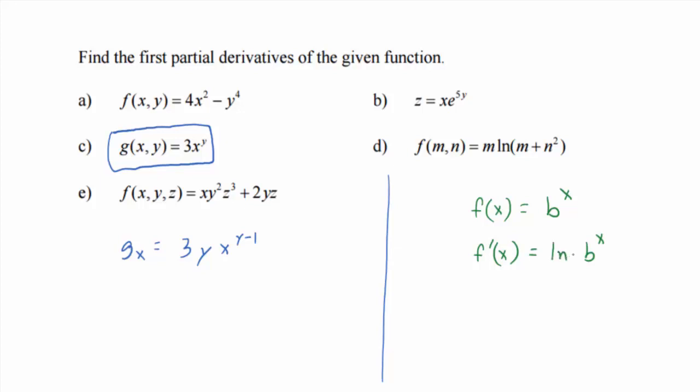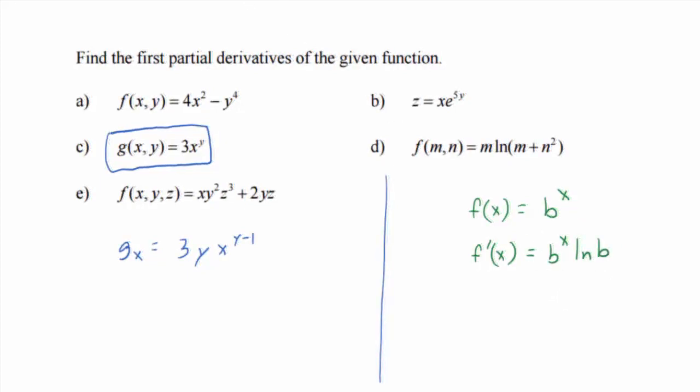So ln of b, there we go. Actually, I think it looks better if we use b to the x and then natural log of b. So you know from calculus 1 that if f(x) equals b to the x, then f'(x) is b to the x times natural log of b. That formula—we're going to do it in terms of y—but that formula is going to help us find the partial with respect to y.